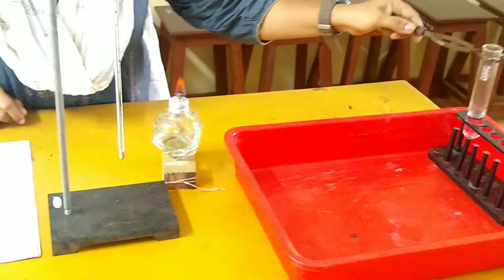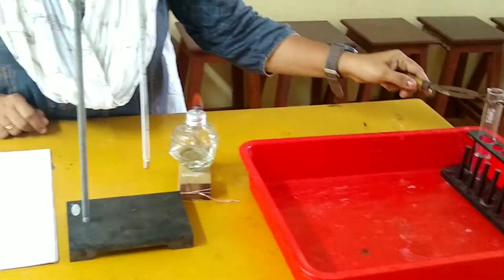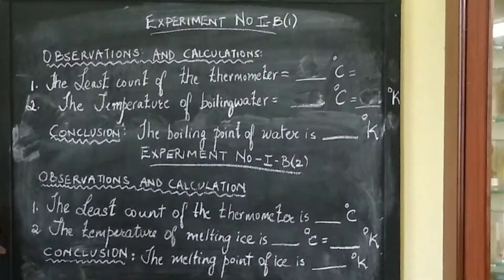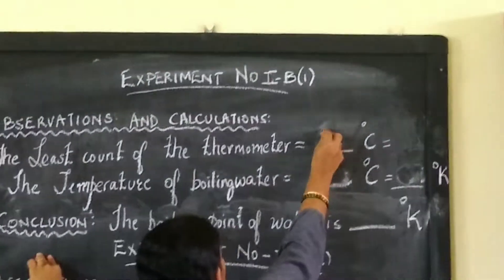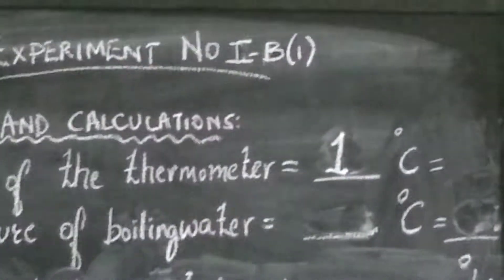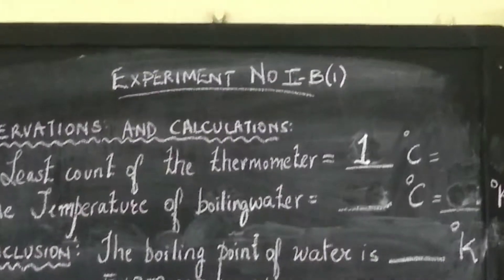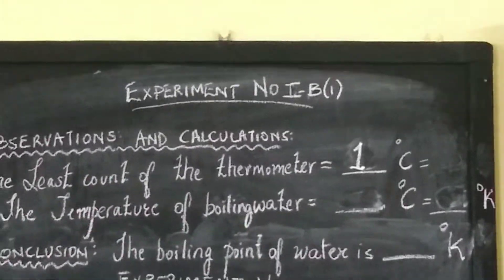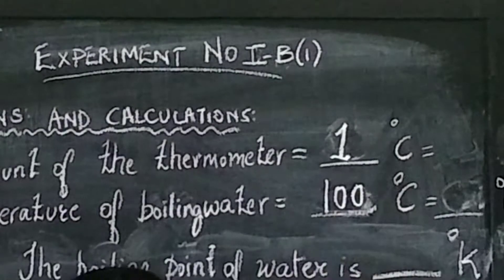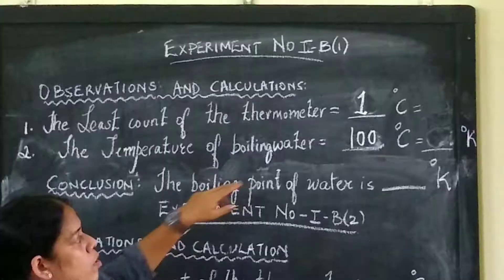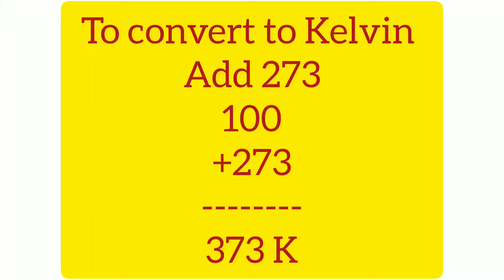Now let us record the readings. As you know, the least count of the thermometer is 1 degree Celsius. The temperature of boiling water as recorded is 100 degree Celsius. Now you have to convert it to Kelvin, so 100 plus 273 will be 373.